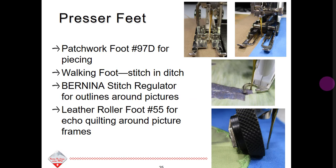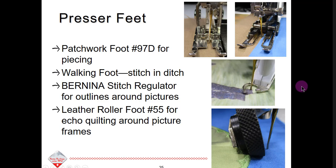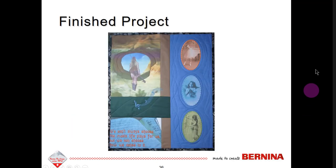For the musical staff, print out a template, mark the desired center location, hoop stable stick tearaway, place the quilt top over the stabilizer aligning the center mark, use absolute check to verify position, rotate about 23 degrees in the machine if needed, add a basting frame, and stitch the musical staff. True all edges, layer the top, batting, and backing, stitch in the ditch through all layers, add any other quilting you wish, then bind and finish the edges. I used the patchwork foot 97D for piecing, the walking foot to stitch in the ditch, the stitch regulator for emphasis areas, and the leather roller foot number 55 for echo quilting and free motion quilting to complete the project.